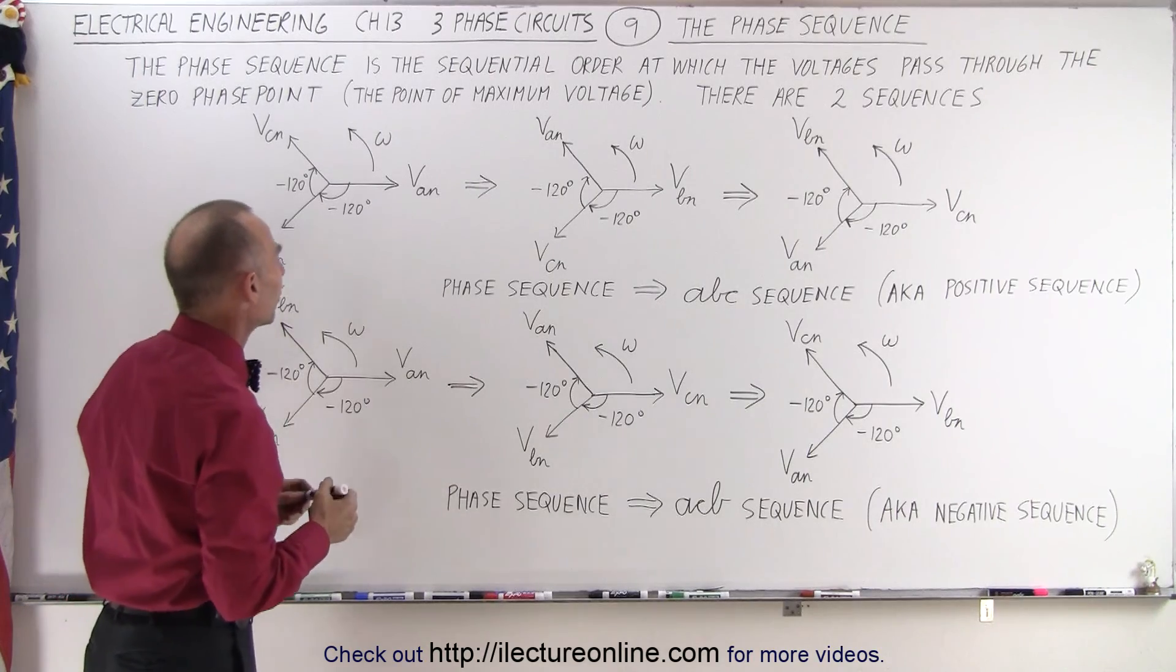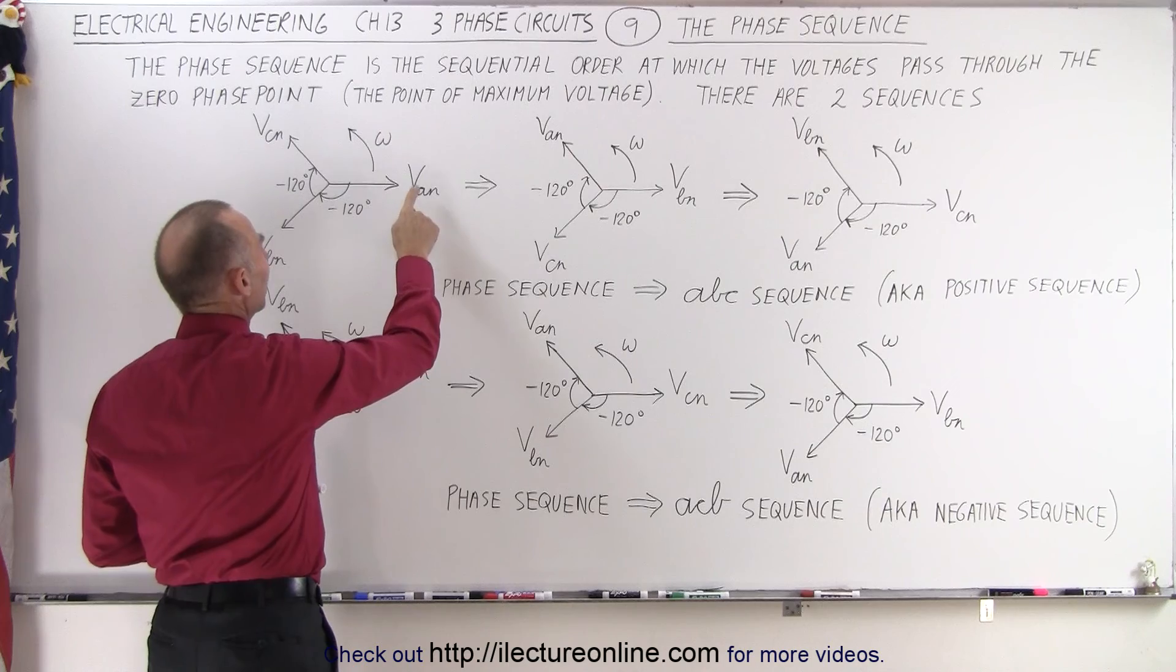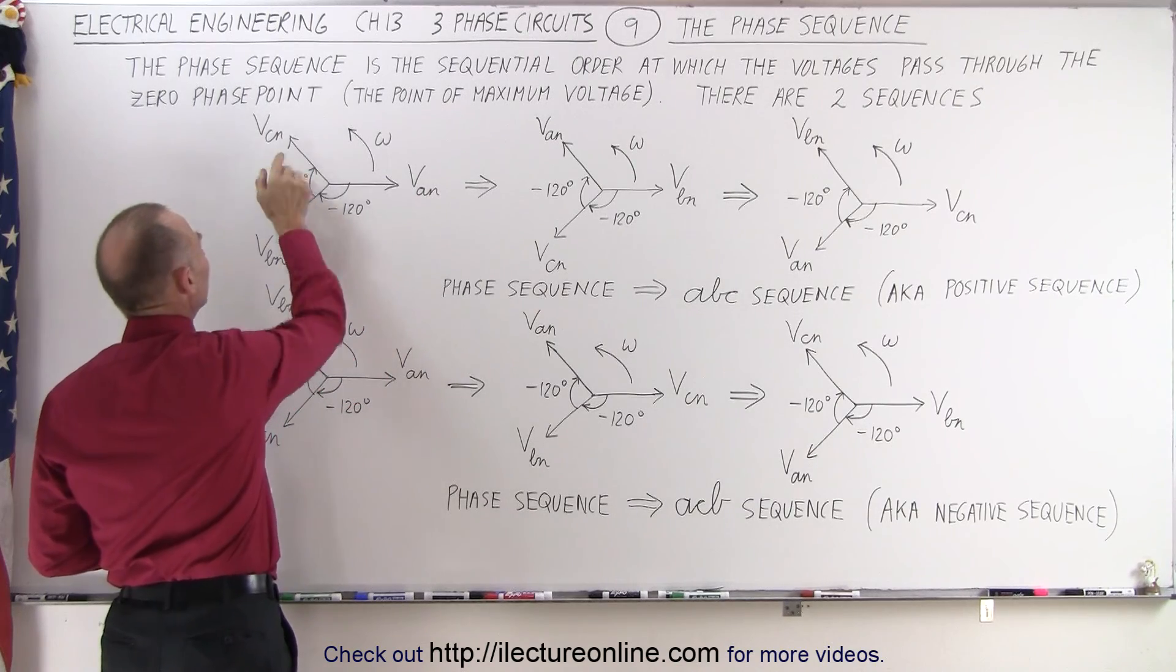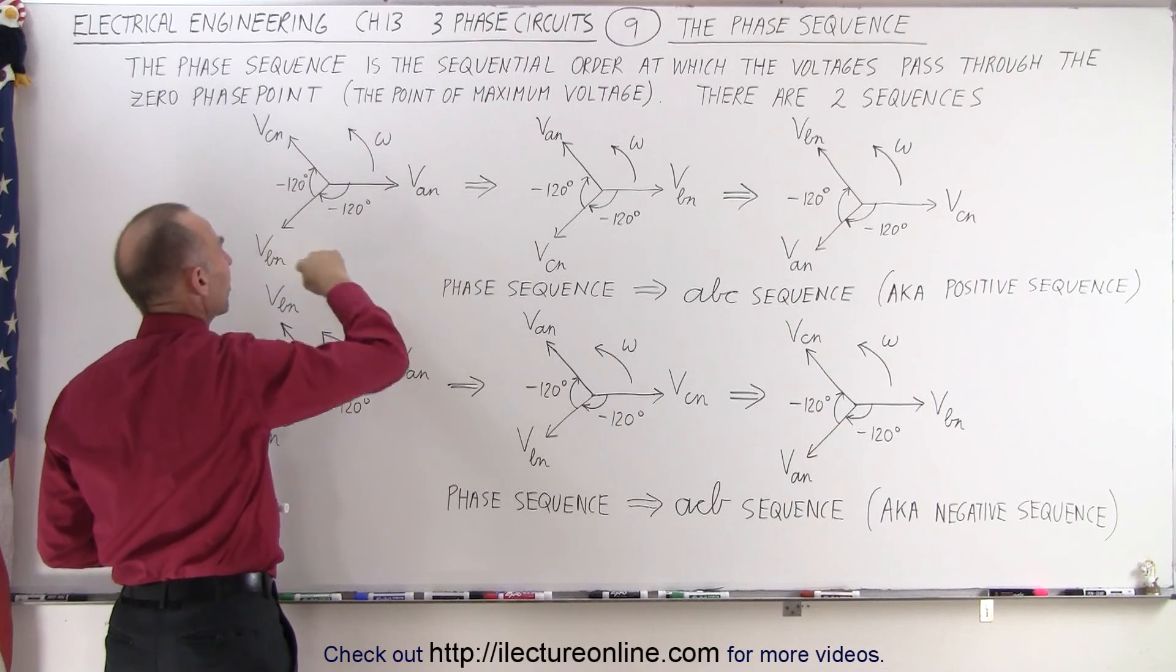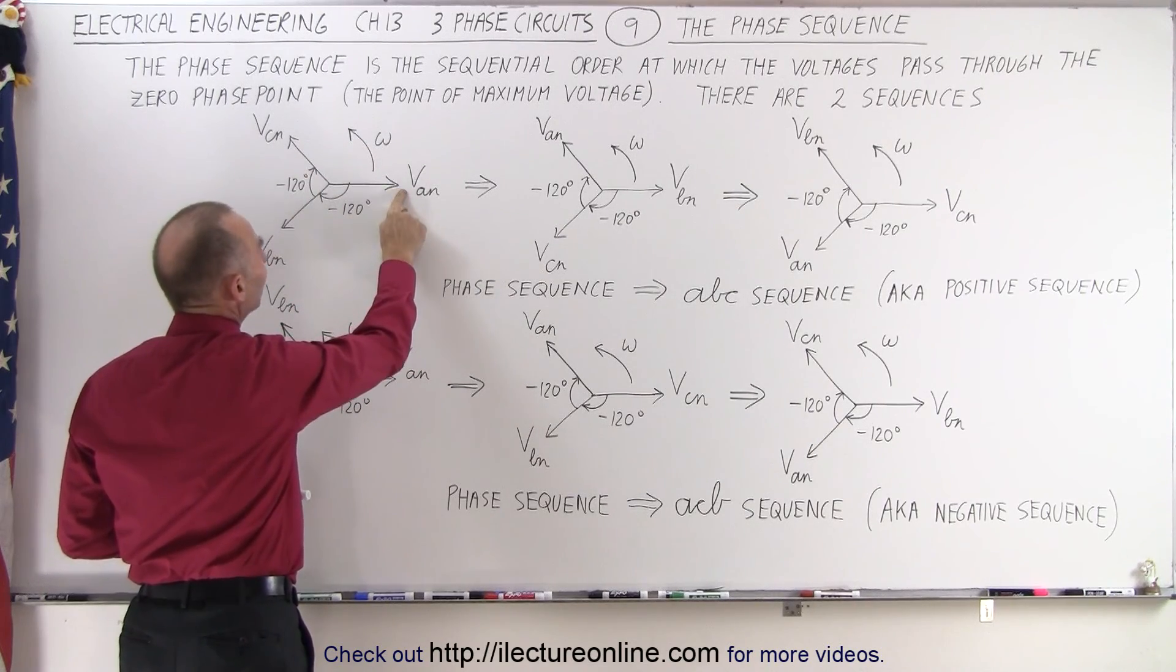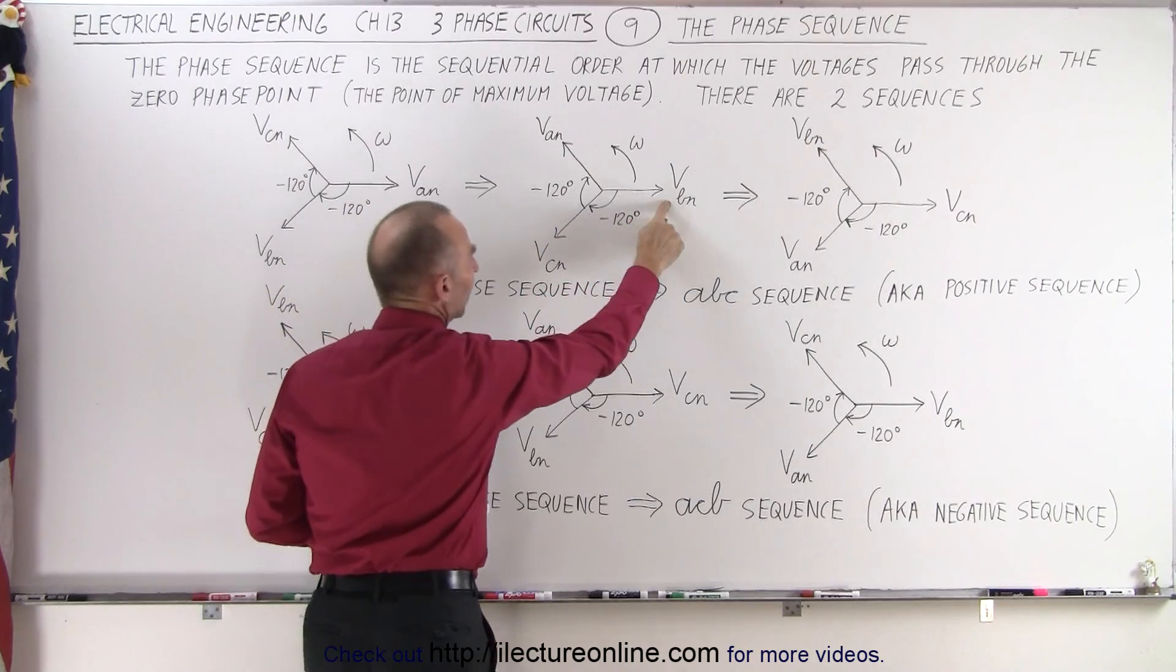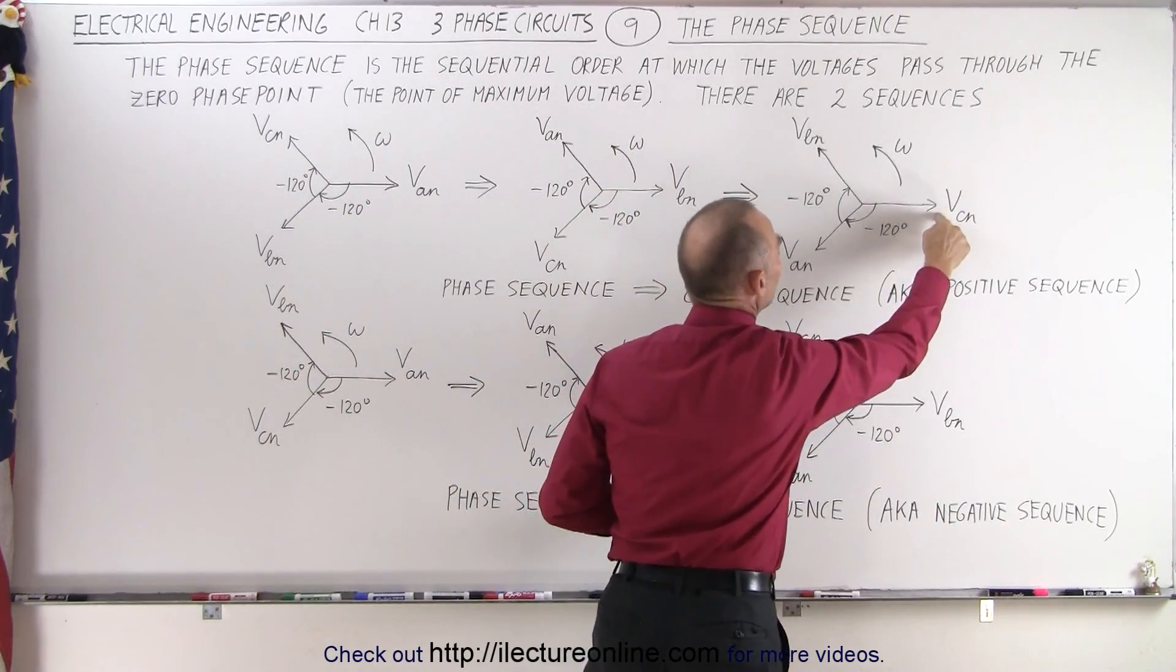So let's take a look at the first sequence. We have to realize that this here is a phase diagram. We have voltage AN, N being the neutral, A being the A terminal. We have voltage BN and voltage CN, and since the phasor will rotate in a counterclockwise direction, we'll get to this point right here, which is called the zero phase point, or the point of maximum voltage. We first have VAN, then VBN will get into its place right here as things rotate, and then VCN will get into its place next.